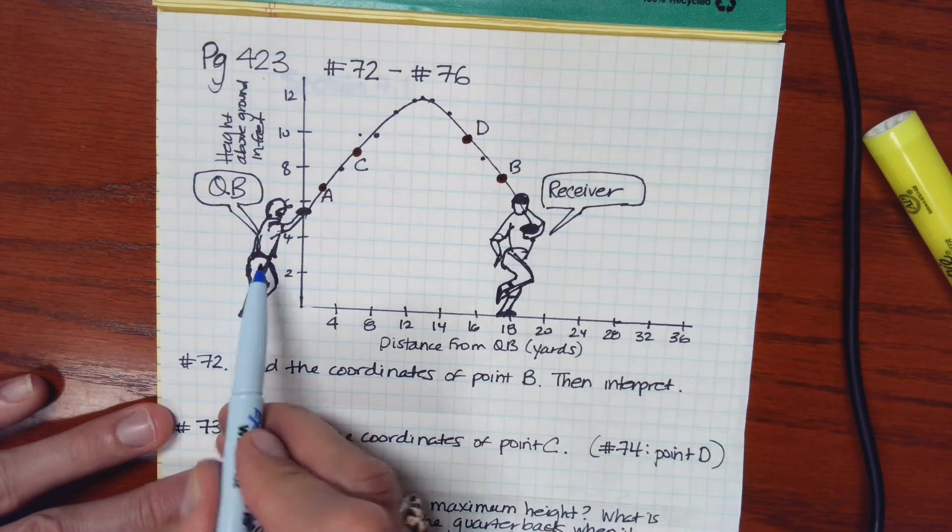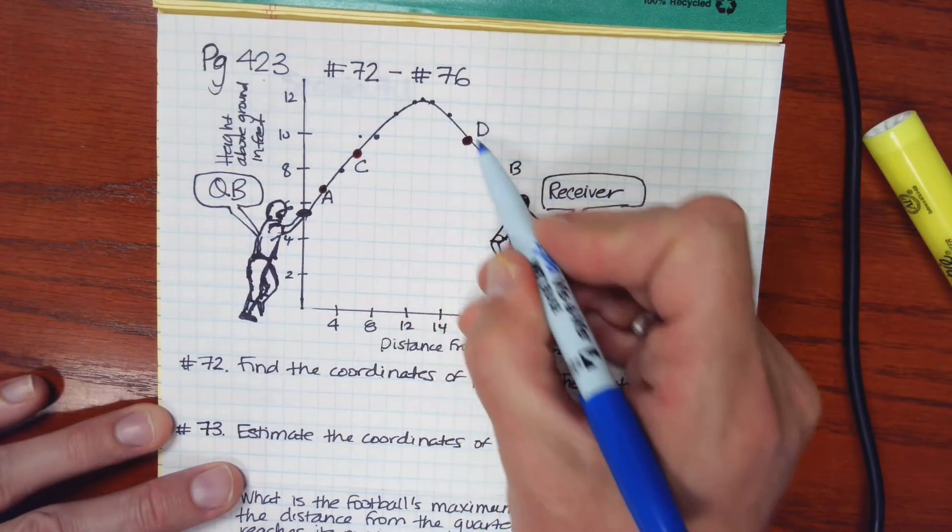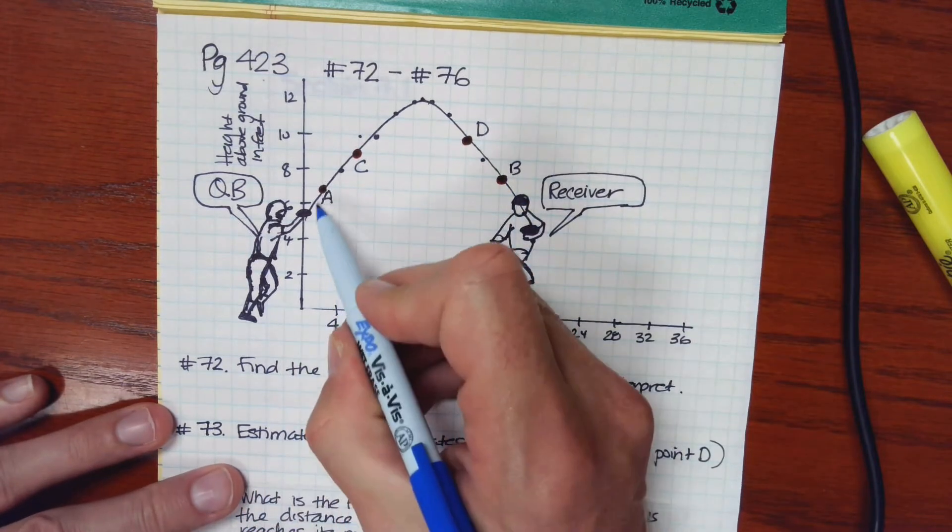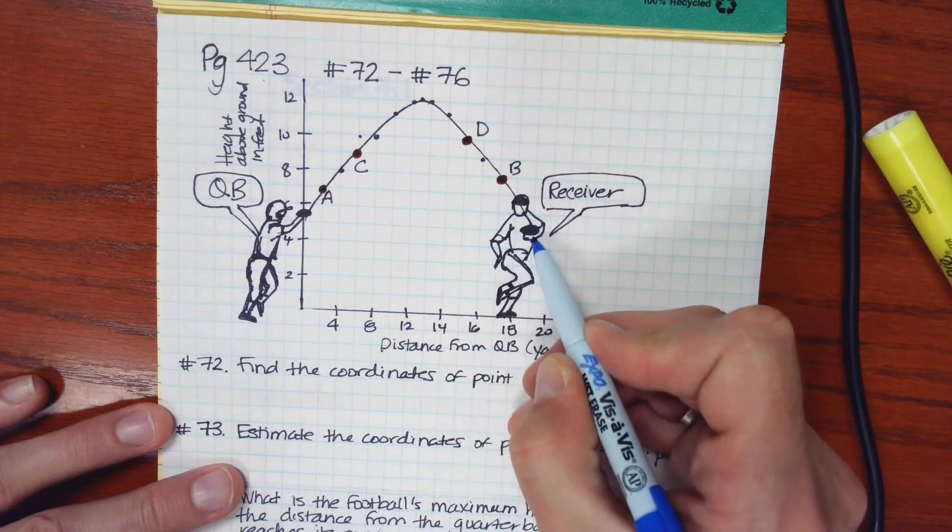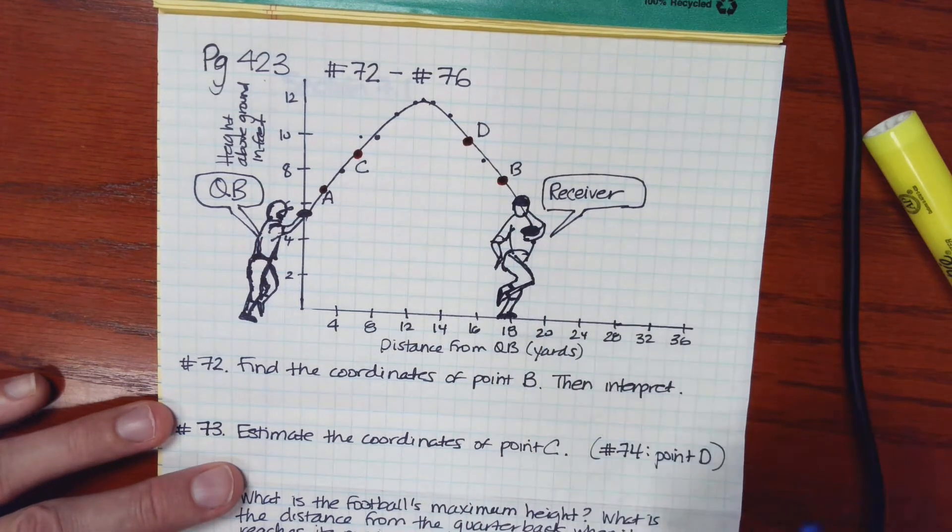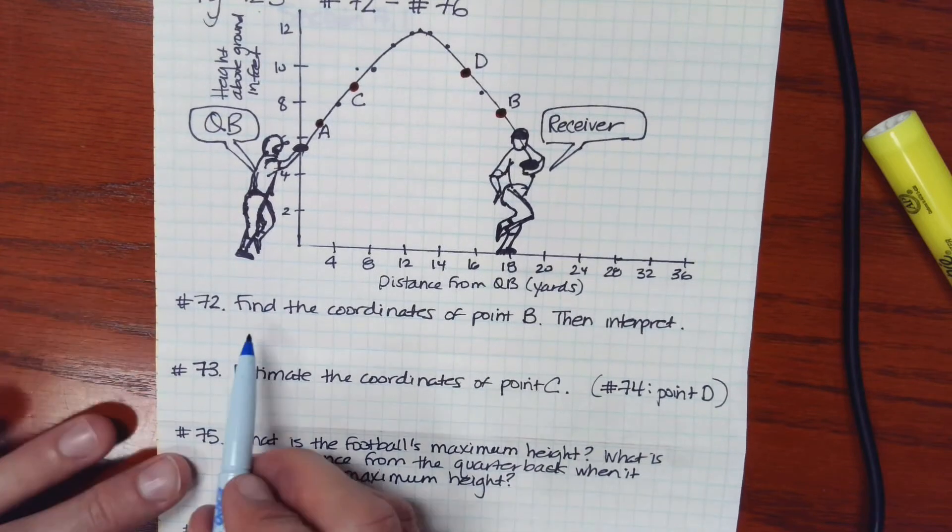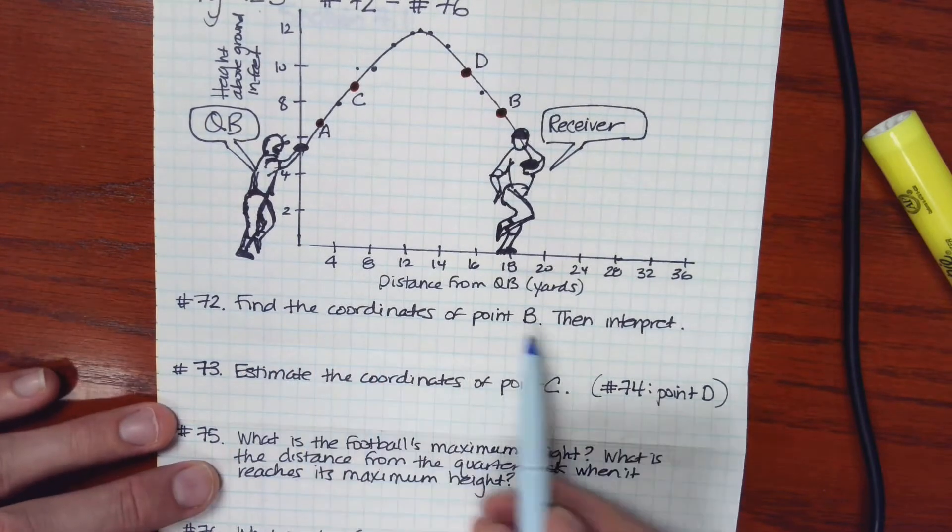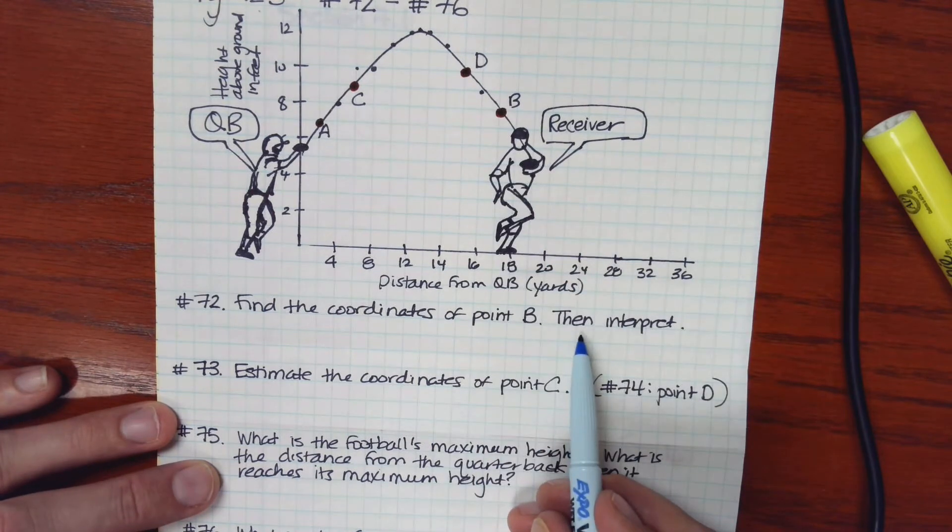Here we have a quarterback throwing a ball, the receiver catching it. This is the path of the ball. So it reaches a certain height and then begins to descend and then it's caught here. And so the questions that were asked are to find the coordinates of point B, so that's here, and then interpret it.